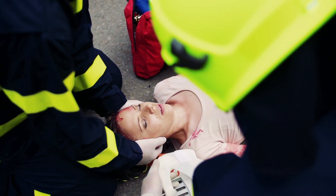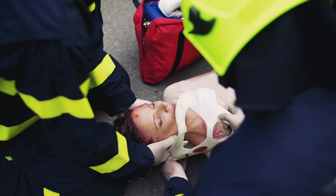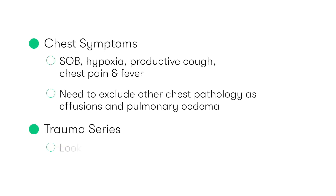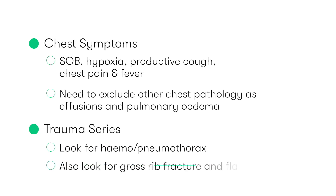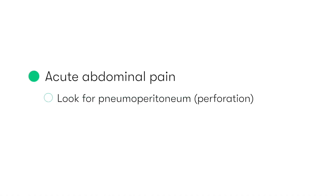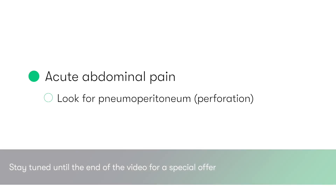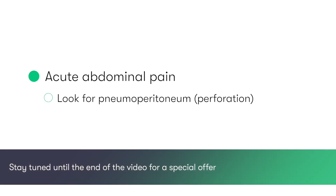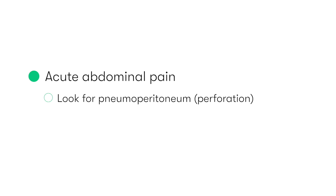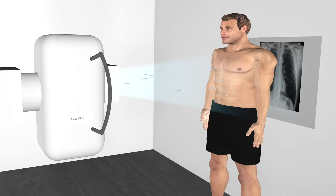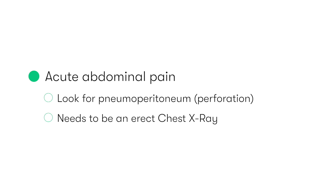Then we have the trauma patient, which would involve performing an AP view to look for the presence of any haemothorax, pneumothorax, any gross rib fractures, or a flail chest. We also perform chest x-rays for patients with acute abdominal pain, to look for any evidence of free air sitting under the diaphragm — we call this pneumoperitoneum — which is indicative of a perforation of the GI tract. It's important to remember that because air and gas rises, we need to position the patient in an erect position prior to undertaking this x-ray, to enable any free air to make its way up underneath the diaphragm and allow us to see it.